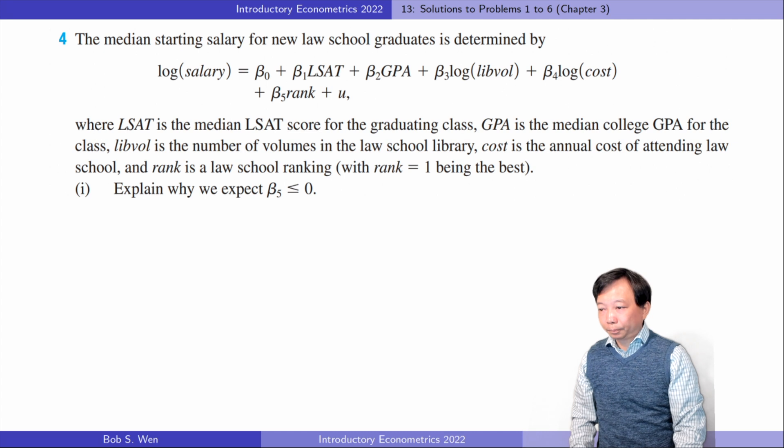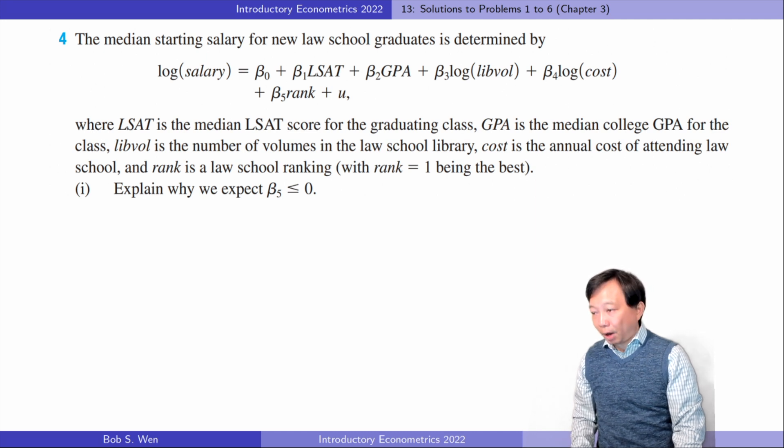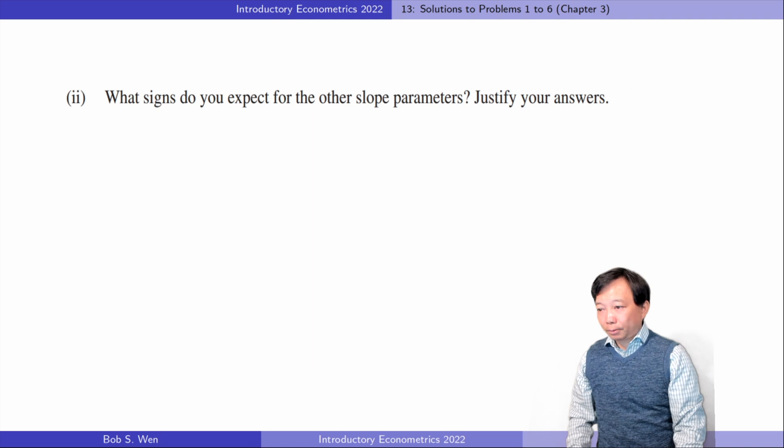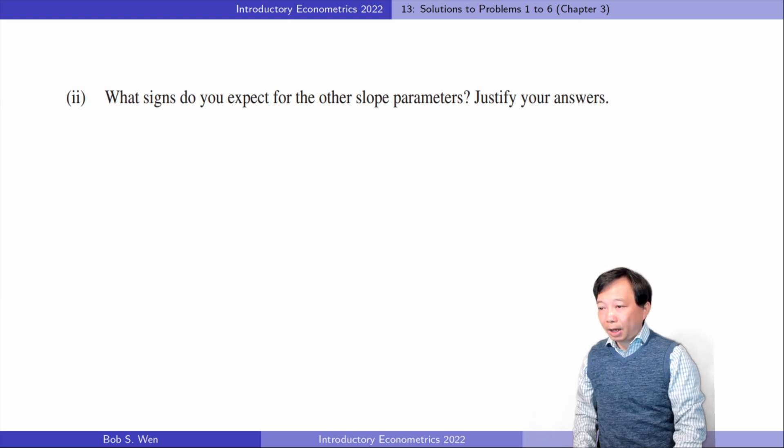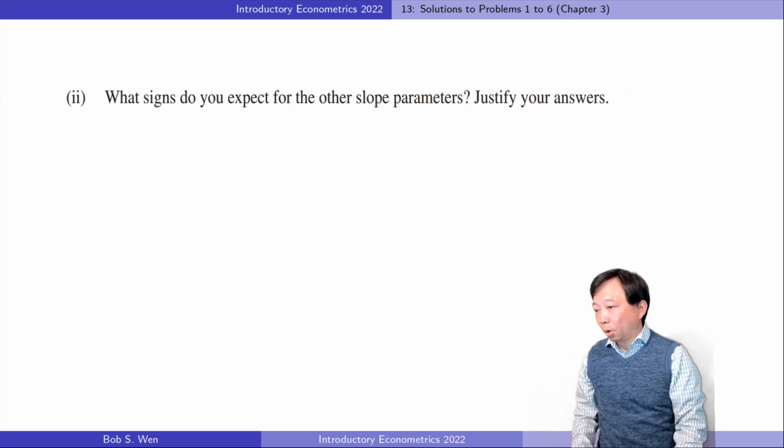Let's go to the fourth problem. Five measured variables determine the median starting salary for new law school graduates. The first question is about the sign of beta 5. It is negative because a small number of rankings means a better law school. Graduates from a better law school are expected to earn more. For the second question, I expect all the other four parameters to be positive. A higher median SAT and a higher median GPA imply better quality of graduates. More volumes in the library and the higher cost of attending school suggest a high quality of the law school. All these factors contribute to a higher starting salary for graduates.